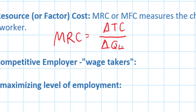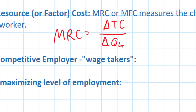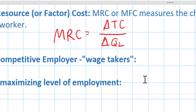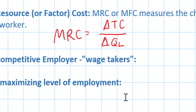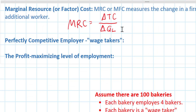On the other hand, if a firm has to raise the wages it paid all of its previous workers in order to hire one additional worker, then the marginal resource cost might be higher than the wage paid to that one additional worker. In a future lesson we'll talk about wage-making firms — what we call monopsonists — employers that have to raise wages for all their workers to attract additional ones. But in this lesson we're not focusing on that situation.